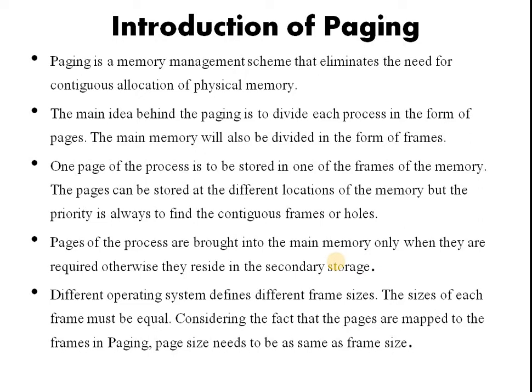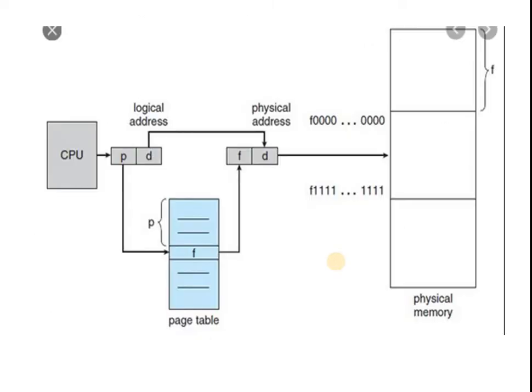Different operating systems define different frame sizes. The size of each frame must be equal, and page size needs to be the same as frame size. The mapping from virtual to physical address is done by the memory management unit, which is a hardware device, and this mapping is known as the paging technique.